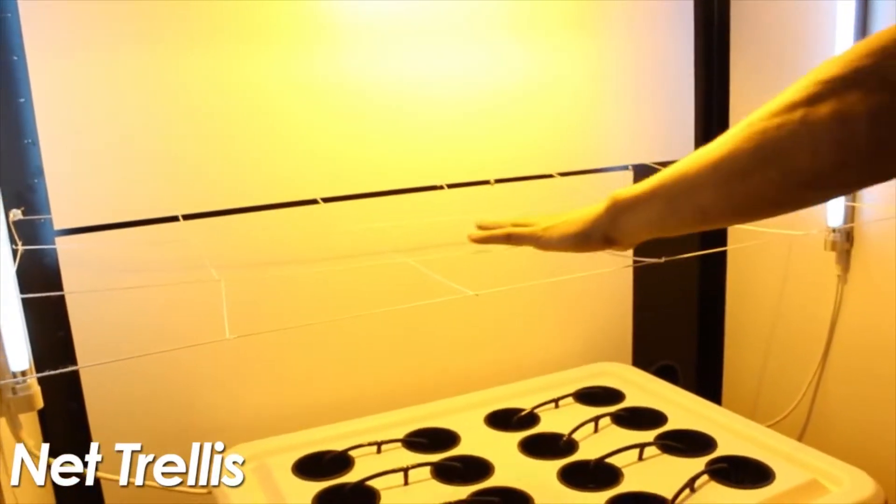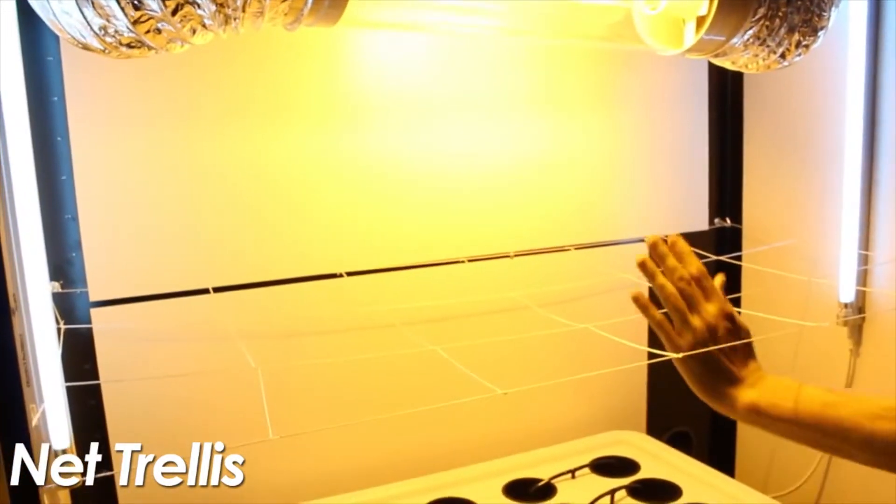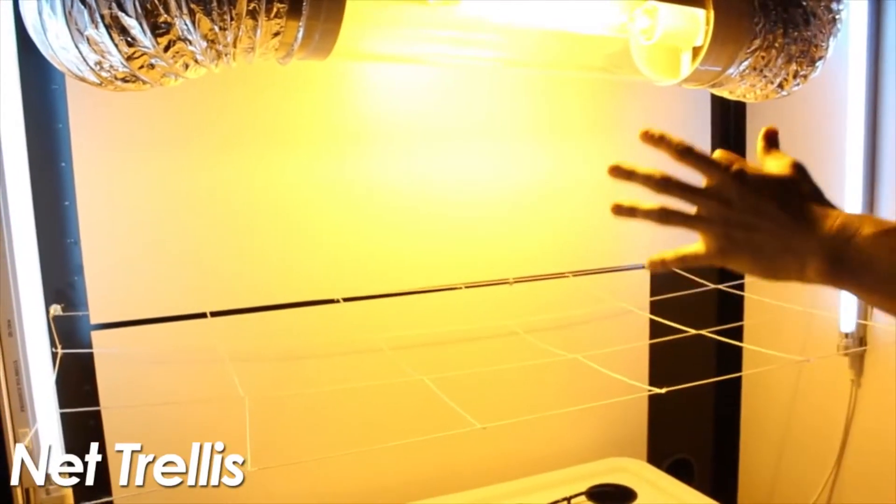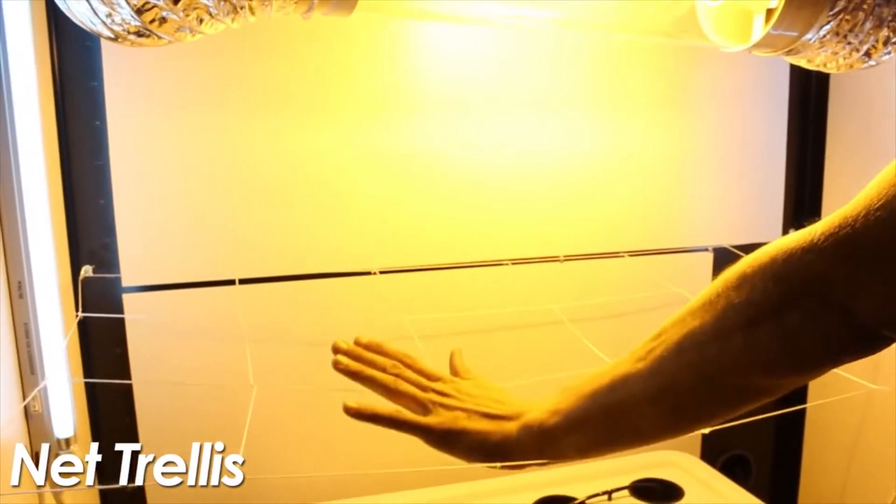You always want your plant canopy to get as close to the light source as possible, so inevitably some plants always grow taller than others. This way you can tie them down, and once your plants develop fruits and flowers, it also helps as a support.